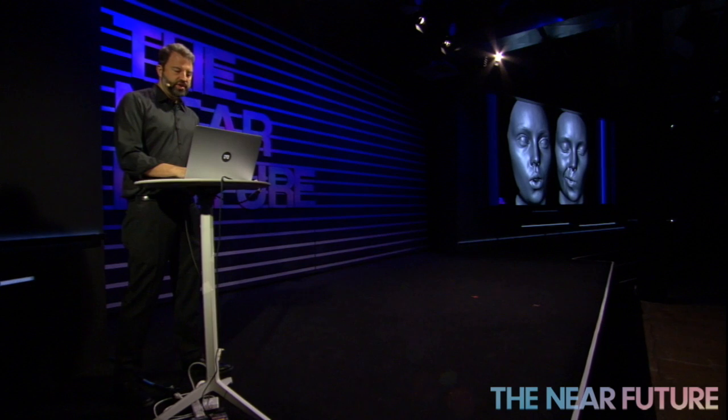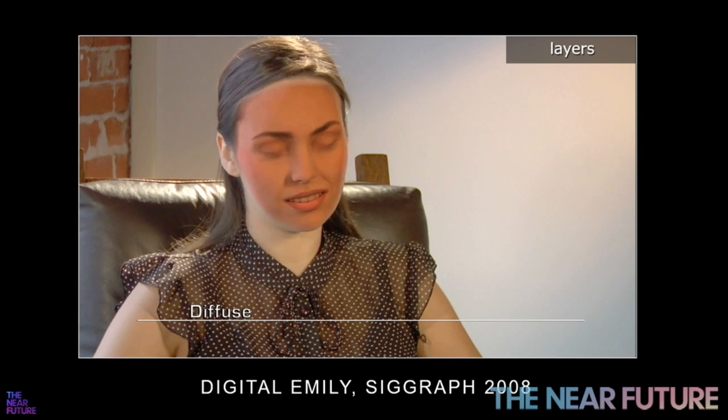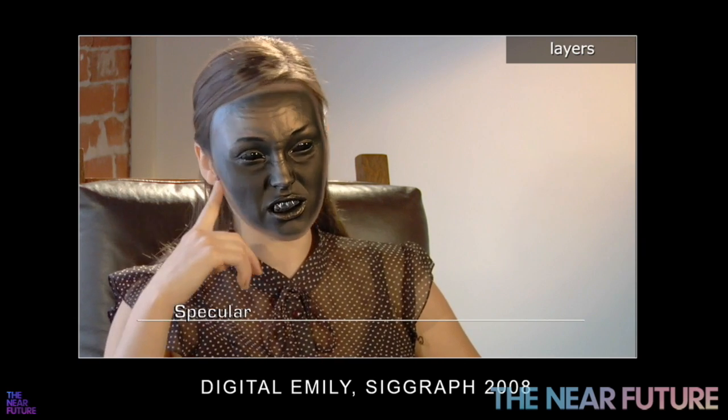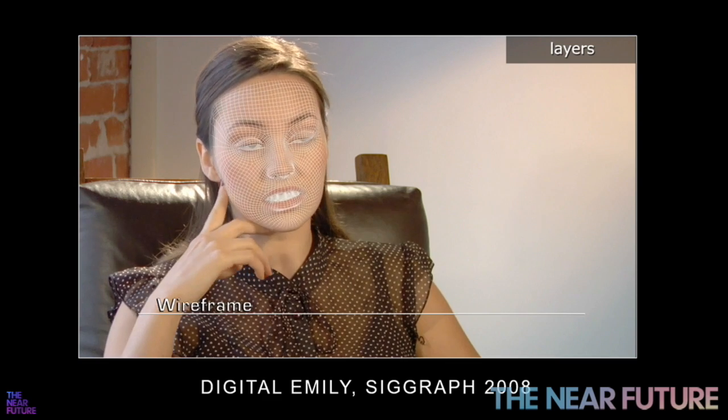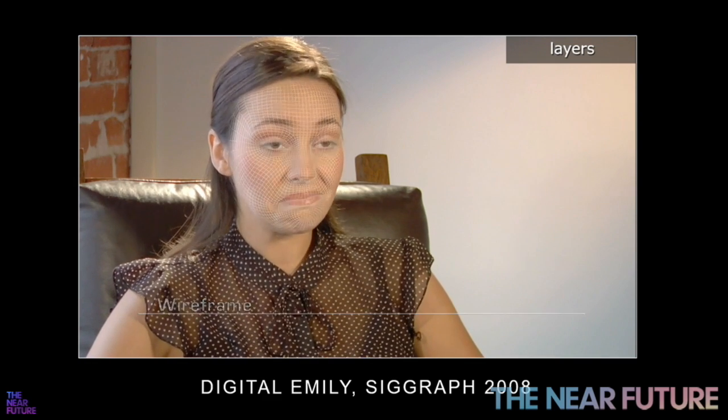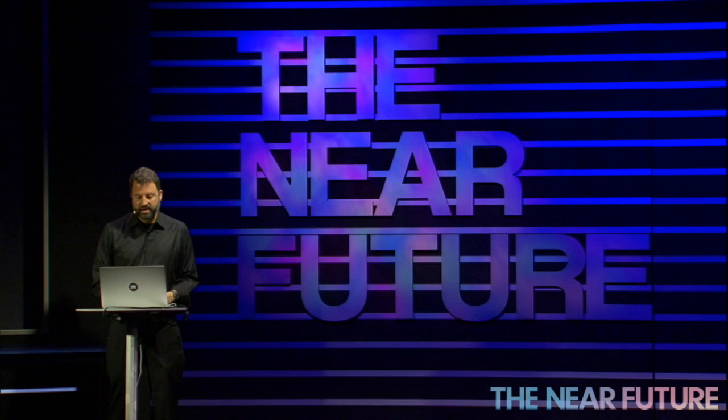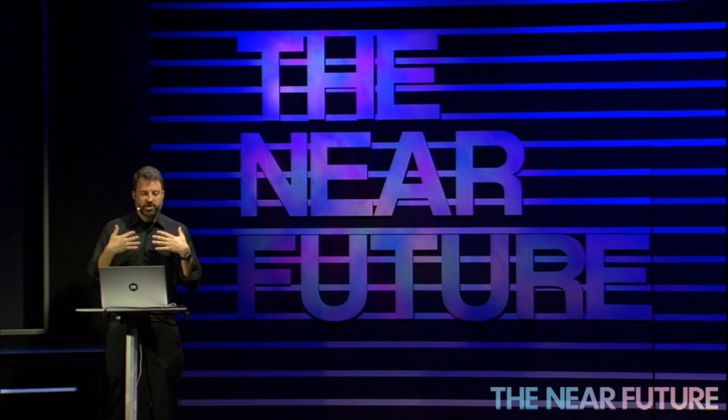I'll switch to a video showing a version of Emily that's a completely digitally rendered face. Her body and hair are still from real video, but we've completely replaced her eyes, teeth, and all of her facial region, and animated it to a performance she gave on video separately. We can see the texture map for the face, the shine off the skin on its own, and the underlying wireframe getting animated. This was something we did back in 2008 for the SIGGRAPH conference — it wasn't a perfect match, but it clearly showed we would eventually be able to get very convincing digital actors.